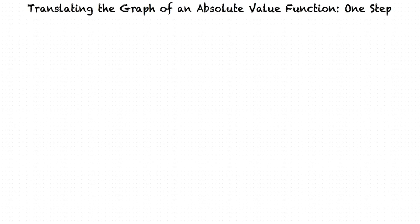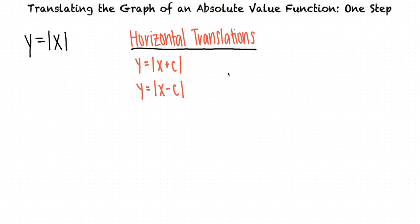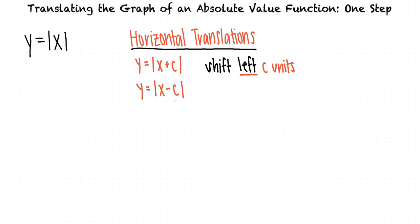Say we're given the absolute value function y equals the absolute value of x. Horizontal translations occur when we add or subtract a constant inside the absolute value sign. To graph y equals the absolute value of x plus c, we would shift the graph to the left c units. To graph y equals the absolute value of x minus c, we would shift the graph to the right c units.